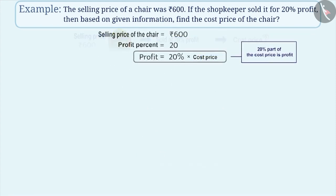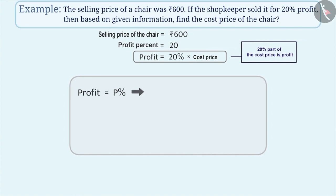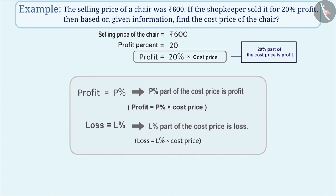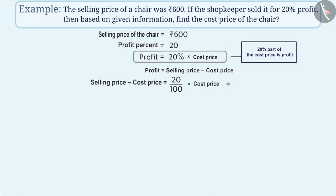Let us suppose you have been given P percentage profit. Then it means P percent part of the cost price is profit. Similarly, if you have been given L percentage loss, then L percent part of the cost price is loss. Since profit = selling price minus cost price, we can say that SP − CP = (20/100) × CP = (1/5) × CP.